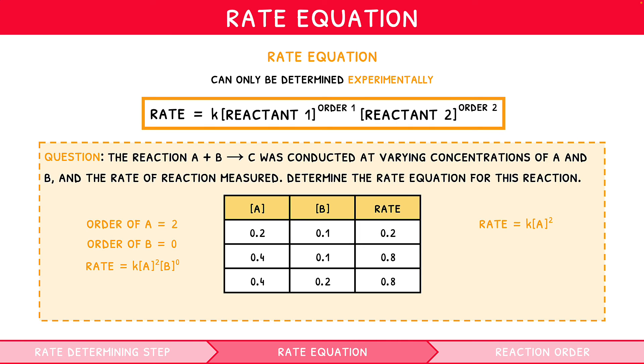However, the question asks for a rate equation, which means we must calculate the value of K to convert our expression to an equation. This can be done by substituting in the values from one of the reactions to our rate expression, and solving for K. So, using the first reaction, we would say 0.2 equals K times 0.2 squared, which rearranges to give K as 5. Thus, the rate equation is rate equals 5 A squared.